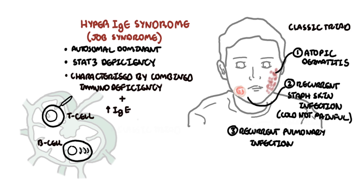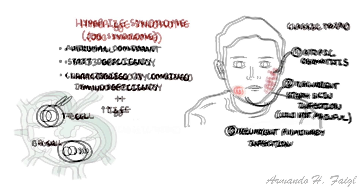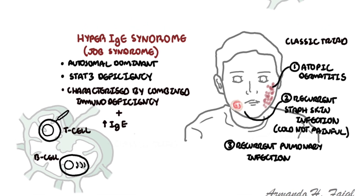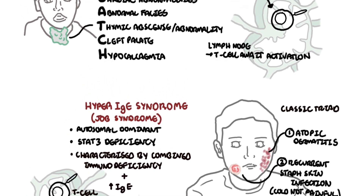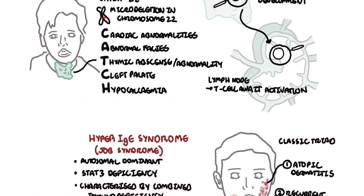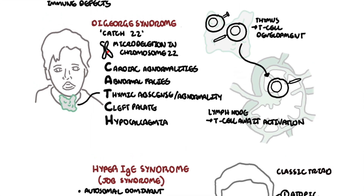In summary, primary immunodeficiencies include well-defined syndromes with immunodeficiencies, of which two are very important to remember: DiGeorge syndrome, caused by mutation in chromosome 22 — remember CATCH 22 — and hyper immunoglobulin E syndrome, or Job syndrome, characterized by elevated immunoglobulin E as well as combined immunodeficiency.